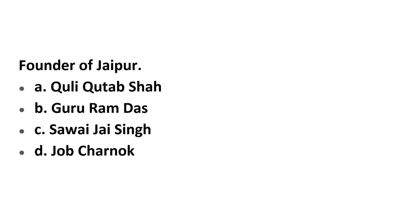Founder of Jaipur City — who founded it? The options are Quli Qutb Shah, Guru Ramdas, Sawai Jai Singh, and Job Charnock. Jaipur is also called the Pink City and the City of Palaces, with many forts and palaces in the founder's name. The correct answer is C — Sawai Jai Singh.